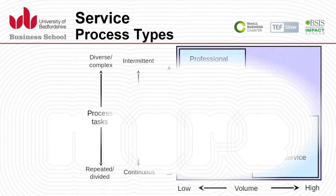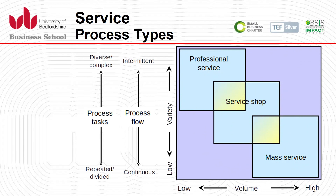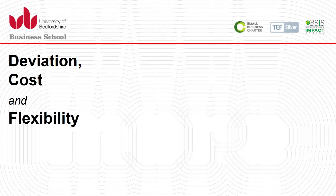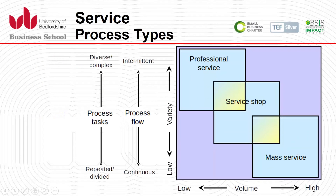For service organizations, the three key types are professional services, service shops, and mass services. Each varies in variety and volume. For example, at a bank: requesting an international business transaction or a loan for a new business requires professional services. In contrast, withdrawing cash or depositing money can even be done by an ATM machine — that is a mass service carried out repeatedly at high volume with very low variation.